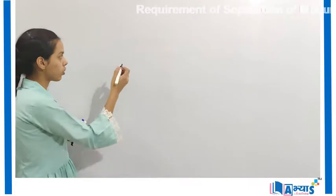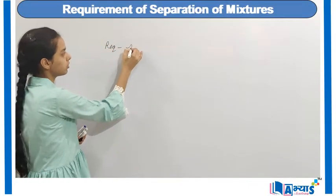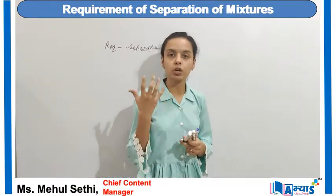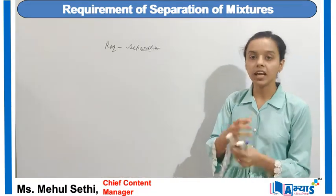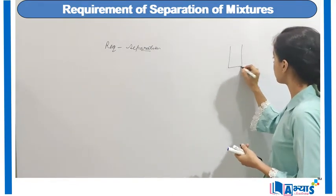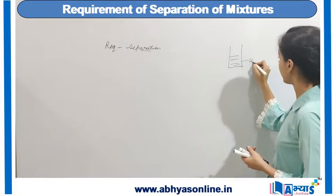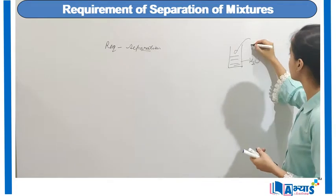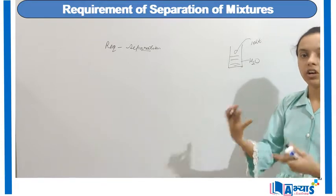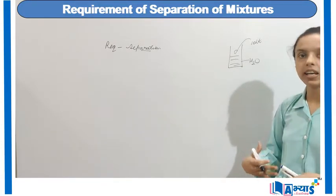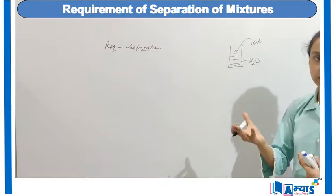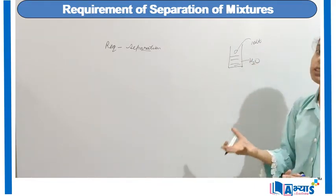Let us now discuss the concept on requirement of separation of substances. Whenever we talk about a mixture, a mixture is made up of two or more different substances that are mixed in any proportion. For example, if I have a beaker filled with water (H2O) and I am adding spoons of salt, this amount of salt can vary — I can mix 10 spoons or even 20 spoons of salt. This type of substance in which the amount of both substances can change is called a mixture.